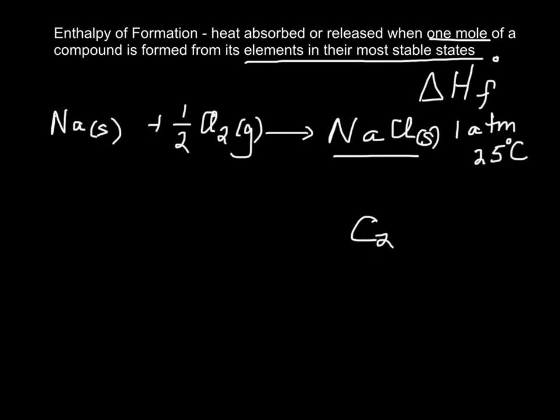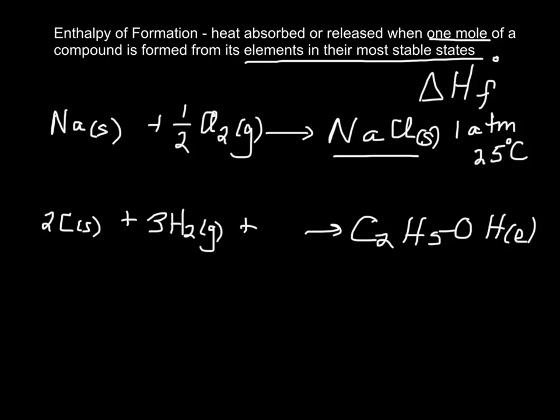What if I wanted to make, say, ethanol, which is a liquid? I would make it from its elements in their most stable states. So 2 carbons, which would be a solid, plus 3 hydrogens - remember, that's diatomic, so gas - plus, looks like I need some oxygen, and one half of those. So if I were to do this reaction, it's the amount of energy that's absorbed or released. It's called the heat of formation.